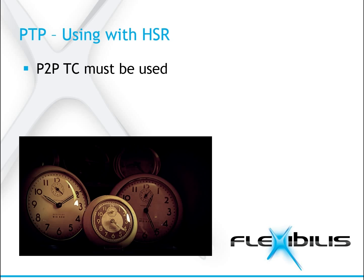With typical HSR networks, peer-to-peer transparent clocks have to be used instead of end-to-end transparent clocks. This is because there are more than one different routes the messages can travel, and in end-to-end mode the delay cannot be calculated separately for all the different routes. So if PTP is to be used in an HSR network, all nodes must have peer-to-peer transparent clocks. Two-step clock, which uses a separate follow-up message after the sync message, doesn't work if there is more than one ring in the network. The reason follow-up messages cannot be used is because there are several different routes for messages to take, and the receiver has no way to know which follow-up messages correspond to which event messages.